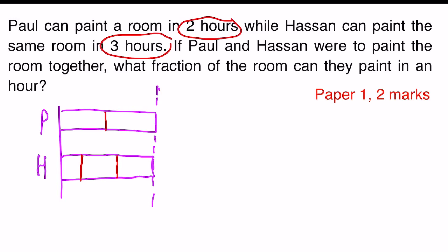So now the question asks if Paul and Hassan were to paint the room together. And the time they're given is an hour. So I am going to find this part of the model and this part of the model. To be able to add them, we have to change it into equivalent fractions.